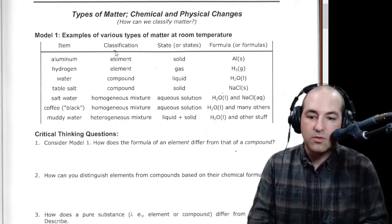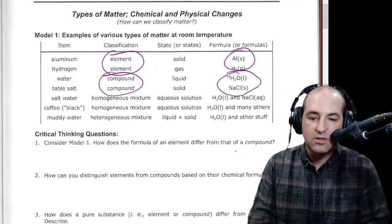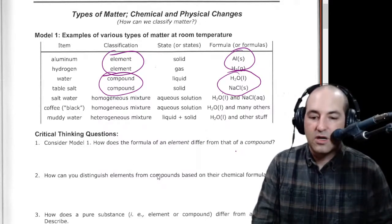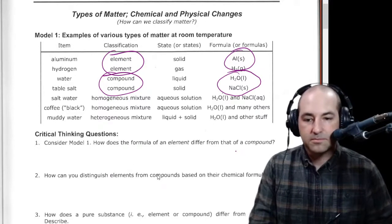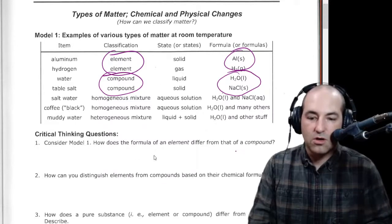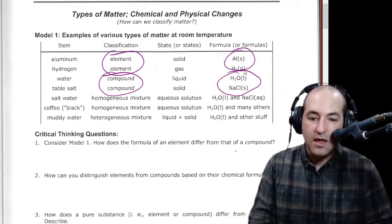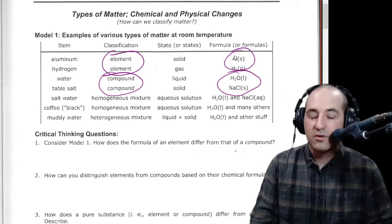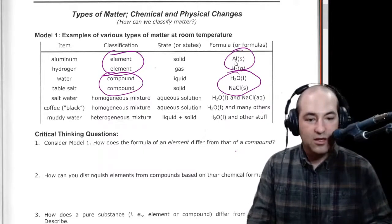So we should be able to look at elements and look at compounds, look at their formulas, because that's what's given here, and write some differences, write some things that are different about those. So if I'm looking at these formulas, one thing that comes to mind is the elements only have one type of the thing from the periodic table. We can just call it a thing from a periodic table. It's an element symbol.